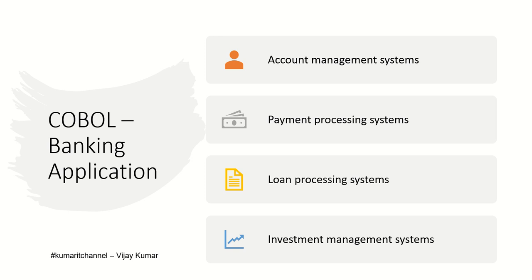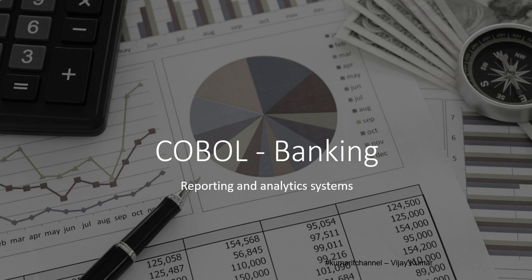Talking about the different banking modules — account management systems are used for managing customer accounts, including deposit accounts, loan accounts, and credit card accounts. Payment processing systems are used for processing payments and transactions, including ACH (Automatic Clearing House) transactions, check processing, wire transfers, and card transactions. Loan processing systems are used for processing loan applications, calculating loan interest, and managing loan accounts. Investment management systems are used for managing investments including mutual funds, stocks, and bonds. Finally, banking reporting and analytics systems are used for generating financial reports, analyzing data, and providing management with insights for decision making.